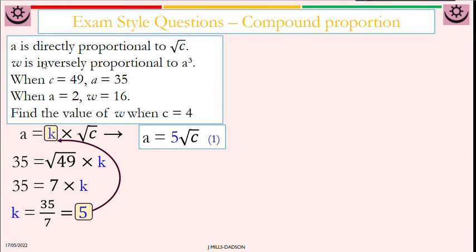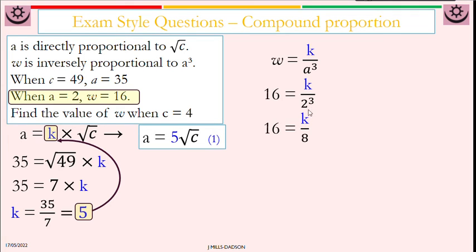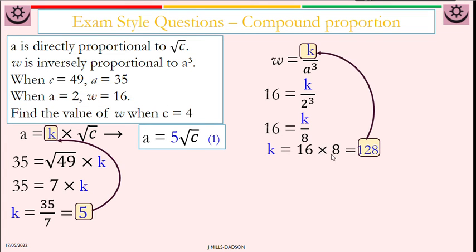Now let's look at W separately. It says inversely proportional to A cubed. So W is equal to K over A cubed. We're going to use these initial values to work out the proportionality coefficient K. So we substitute A is 2, W is 16. 2 cubed is 8. 16 equals K over 8. Multiply both sides by 8. K is 128. So our formula in an explicit form is W equals 128 over A cubed.